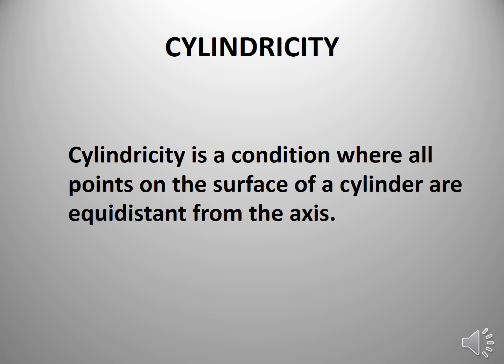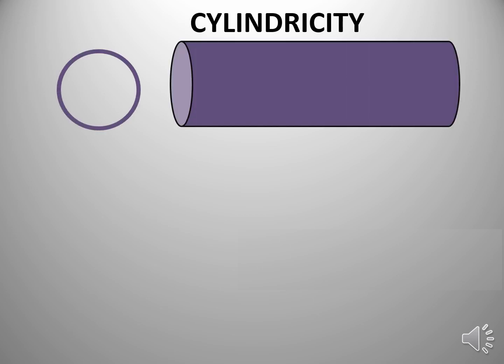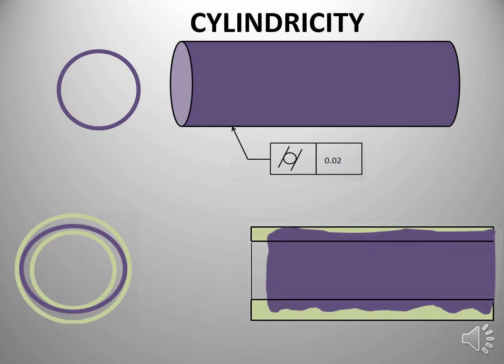Cylindricity is a condition where all the points on the surface of a cylinder are equidistant from the axis. Here what we have to understand is in cylindricity all points on the surface of the cylinders are equidistant from the axis, but in circularity only a single plane we are considering. Here we can consider a cylinder which required a cylindricity of 0.02. This means that all points on the surface should be within this tolerant zone.